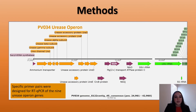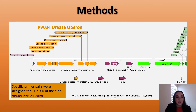Here's another diagram of the operon in its order. It starts out with the urea channel UreI, then it has the subunit genes, and then the accessory proteins UreE, F, G, and D.